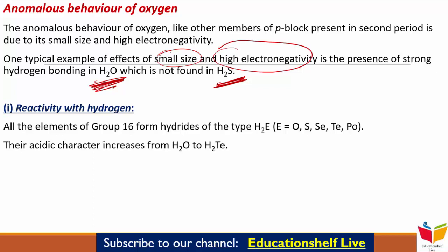दूसरी तरफ, अगर हम बाकी elements देखें group के, तो उनकी valence shell expand हो सकती है, और उनकी covalency 4 से ऊपर जा सकती है, जैसा हमारा nitrogen का case था।